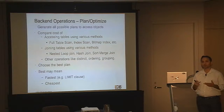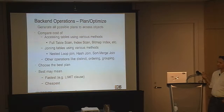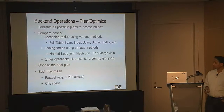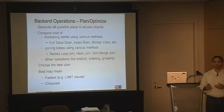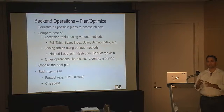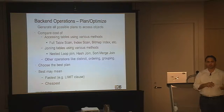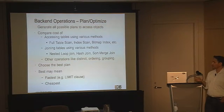Other operations it optimizes for include ordering, distinct operations, grouping, and pruning out groups. It then chooses the best plan. The best plan depends upon what the application wants — if the application only wants the first few rows, it would choose a different plan than if it wants all 10,000 rows. The plan that gives the complete result set fastest may differ from the one that returns the first few rows fastest.